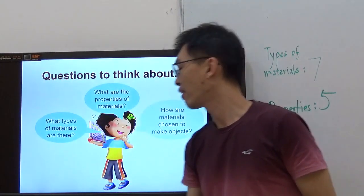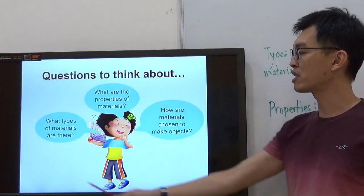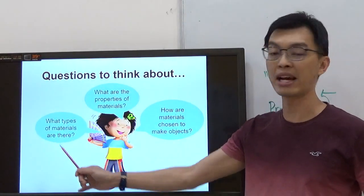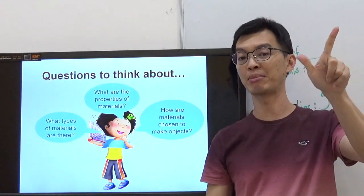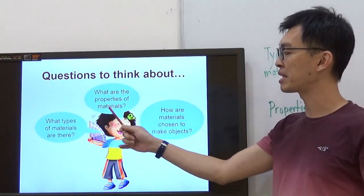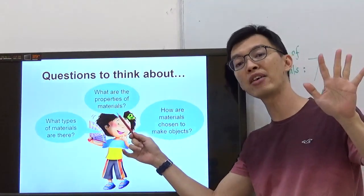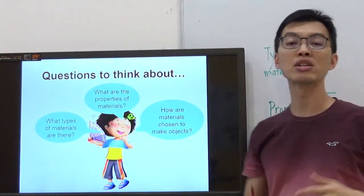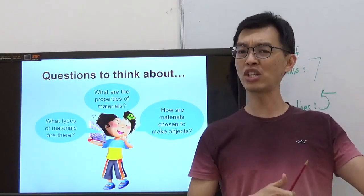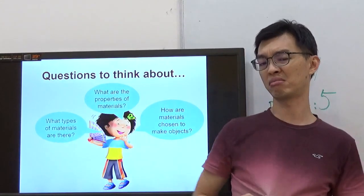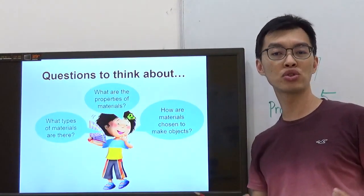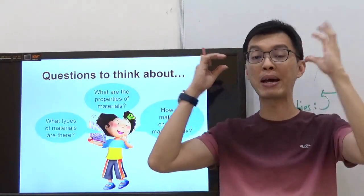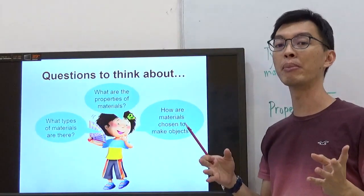We have three questions to talk about. First question, what type of materials are there? Like I mentioned there are seven types. And what are the properties of materials? There are five properties. How are materials chosen to make objects? So we are going to talk about why did I choose this material to make a t-shirt? Why do I choose a certain material to make my spectacles?